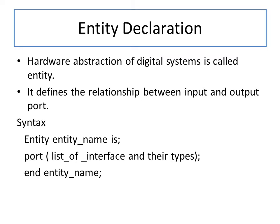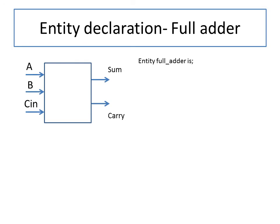Let us see an example. Here we are declaring the entity for a full adder. A full adder is a combinational circuit with three inputs: A, B, and C_in (initial carry), and two outputs: Sum and Carry (C_out). We write 'entity full_adder is', then in the port we declare A, B, C_in as input standard logic, and Sum, Carry as output standard logic.